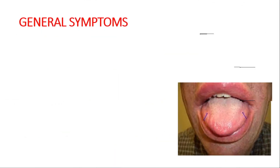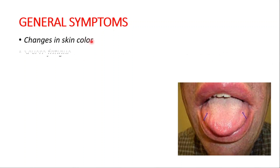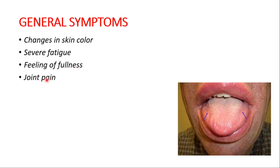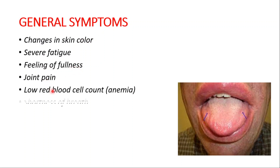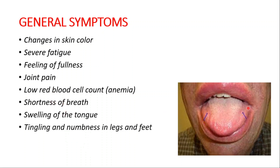The general symptoms of amyloidosis are changes in skin color, severe fatigue, feeling of fullness, joint pain, low red blood cell count, shortness of breath, swelling of the tongue, and tingling and numbness in the legs and feet.